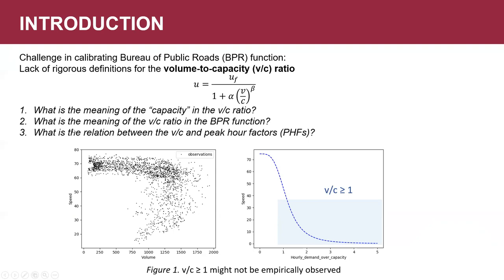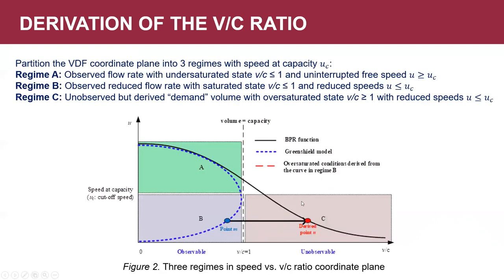The second question is: what is the meaning of the V-over-C ratio in the BPR function? Many researchers already recognize the inconsistency between the speed-volume fundamental diagram and the BPR function. The fundamental diagram is a parabolic U-shaped curve, whereas the BPR function is a monotonically decreasing function where V-over-C might be larger than one to express the oversaturated situation. We partition the V-over-C coordinate plane into three regimes.